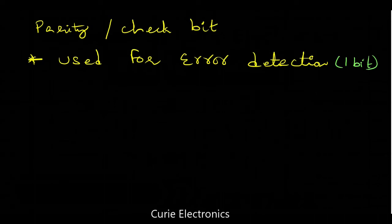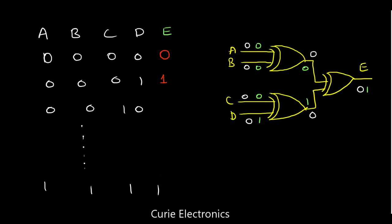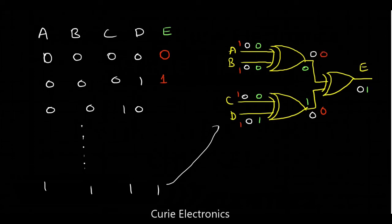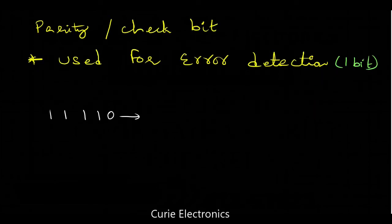Let us assume we have sent data 1 1 1 1. The parity bit is going to be zero — for an even number of ones, we get parity zero. We are giving all inputs as 1 1 1 1, so the output is zero and the parity bit is also zero. So for even parity we transmit zero — this is the even parity.